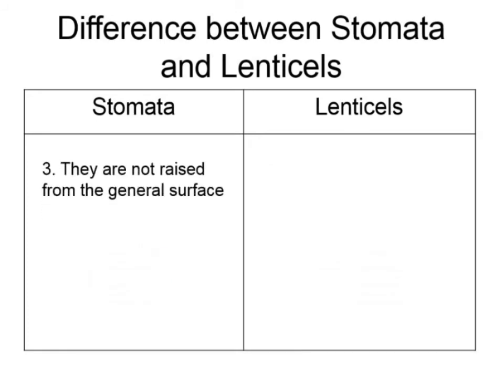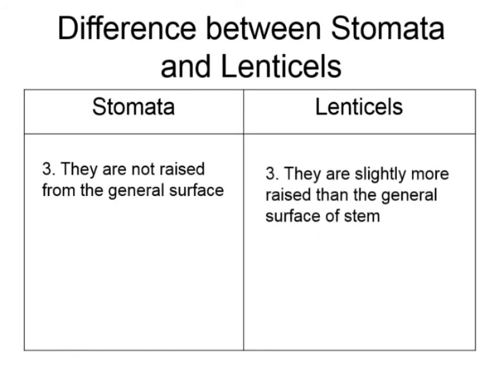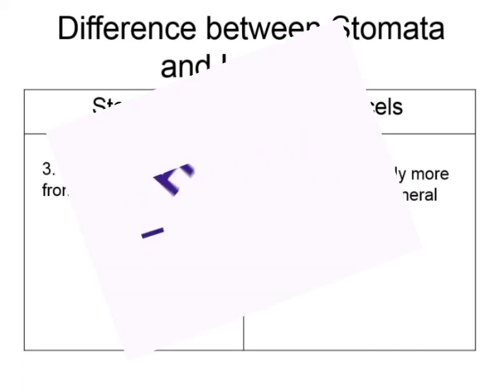The next difference is that stomata are not raised from the general surface, while lenticels are slightly more raised than the general surface of the stem.